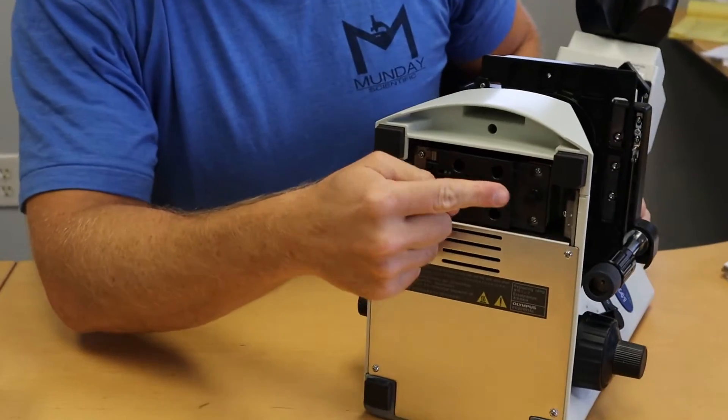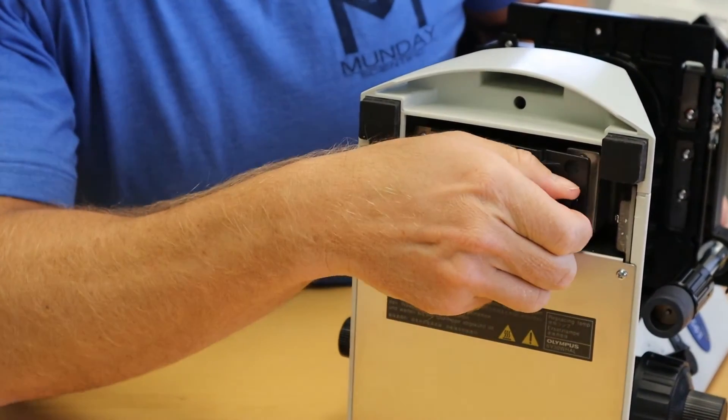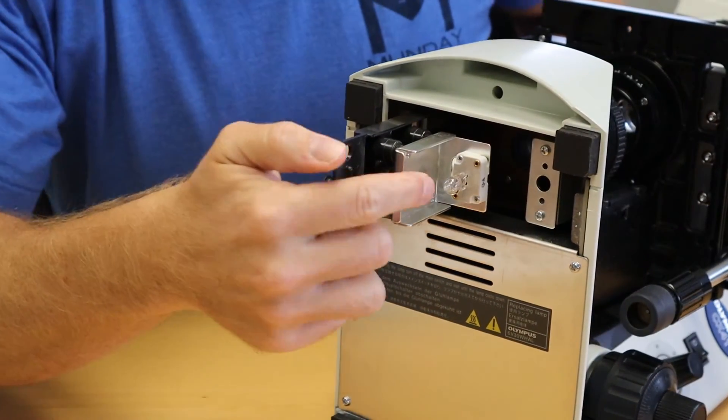There's a little trap door here. You pull that trap door open and there's your bulb.